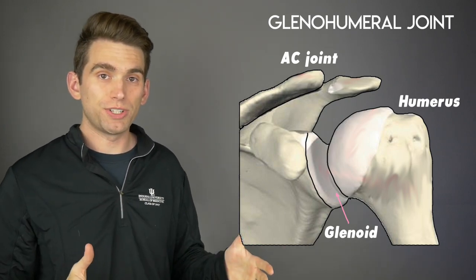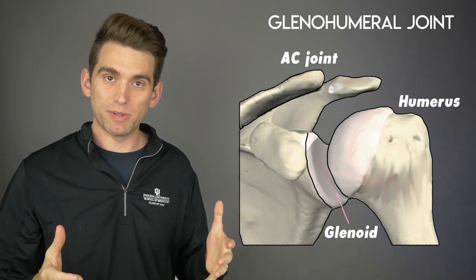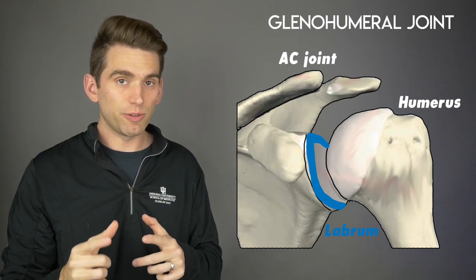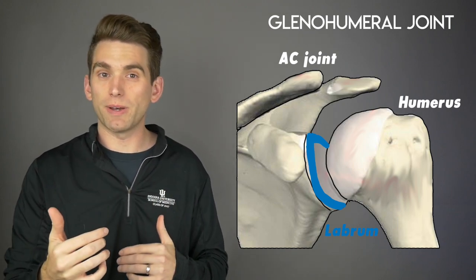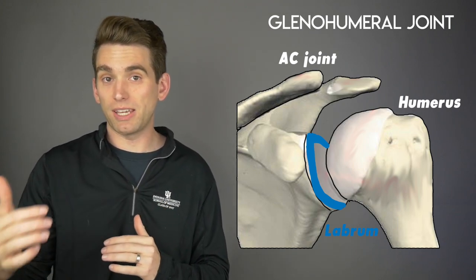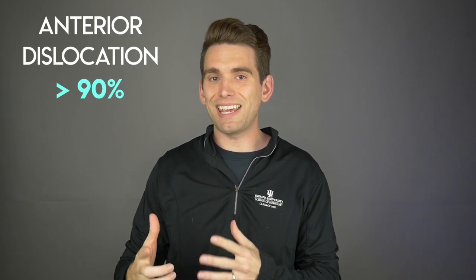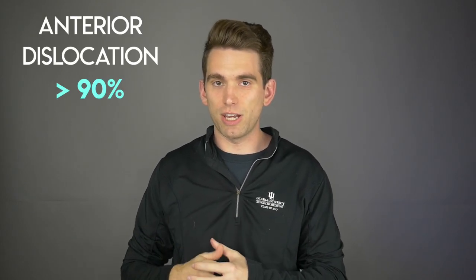It's really just the smooth surface of the glenoid with the surrounding soft tissue that helps provide stability. The shoulder also has a labrum, which is a buildup of cartilage around the glenoid, and that's going to be really important as we talk about potential complications after a shoulder dislocation. There are two general types of shoulder dislocations: the first and most common, happening in over 90% of all shoulder dislocations, is an anterior dislocation.